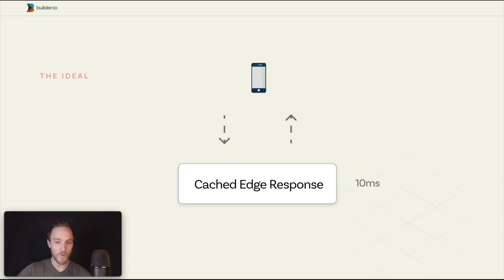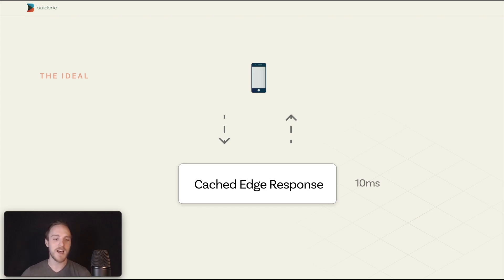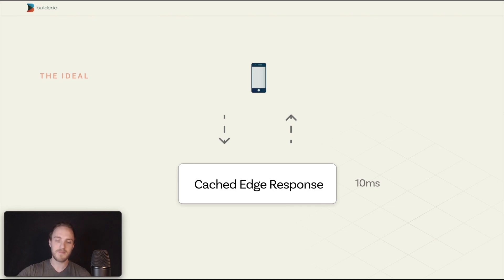What we want instead is a cached response locally — from the edge, an edge network that's physically very close. There's almost no travel time between the edge server and your visitor. We want it cached and immediately available, so the response time is 10 milliseconds with no blocking JavaScript. You just get your personalized page. The question is: how do you do that? Because before today, this was not a very straightforward process.